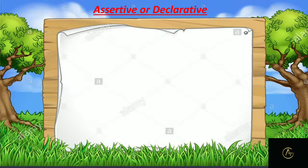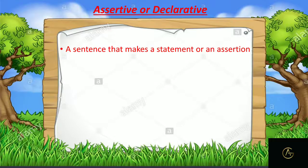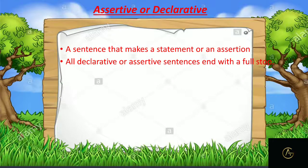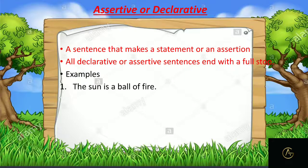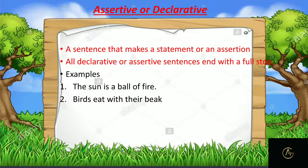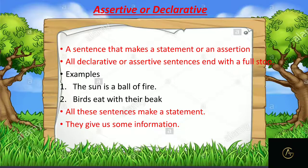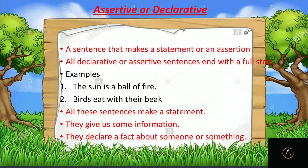Let's study each type in detail. First: assertive or declarative. A sentence that makes a statement or an assertion, giving particular information about something, is an assertive or declarative sentence. All declarative sentences end with a full stop. Examples: 'The sun is a ball of fire' — it gives information, so it is assertive. 'Birds eat with their beak' — it also gives information. They declare a fact about something or someone.